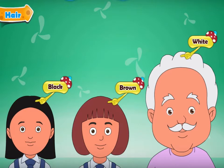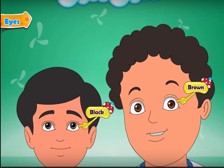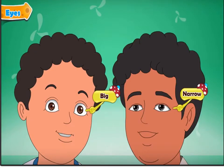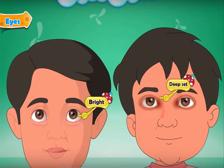Different people have different eyes, such as black eyes or brown eyes. Some of us have blue eyes, while some of us have green eyes. Some people might have big eyes, while some people might have narrow eyes. Some people have bright eyes, while some people have deep set eyes.